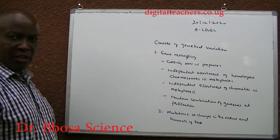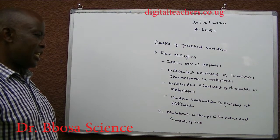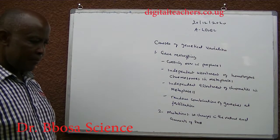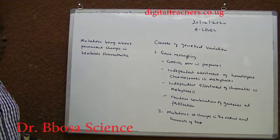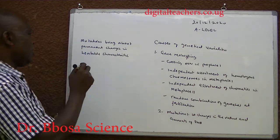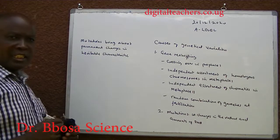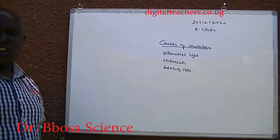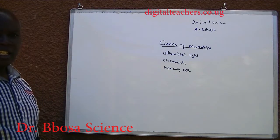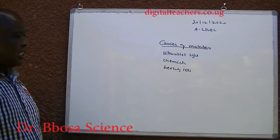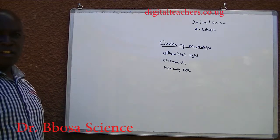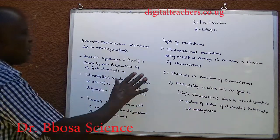Mutation is changes in the nature and the amount of DNA. Mutation brings about permanent changes in heritable characteristics. Causes of mutation include ultraviolet light, chemicals such as colchicine, and freezing of cells.